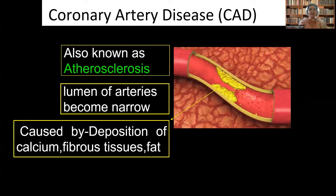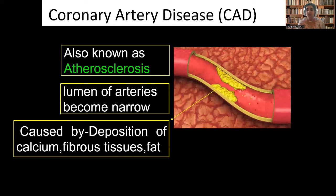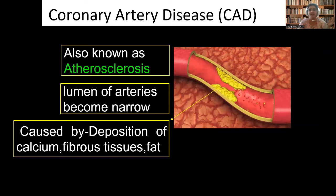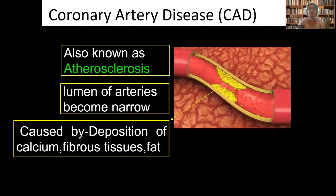What is coronary artery disease? The arteries are necessary for carrying blood, and it has to flow smoothly. When the lumen of the arteries becomes narrow because of deposition of fat, fibrous tissues, or calcium, the blood will not flow smoothly to all the cells or from the heart. This causes a severe heart disorder called sclerosis — specifically atherosclerosis — which is a coronary artery disease.